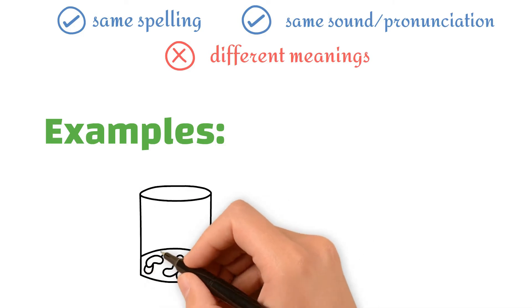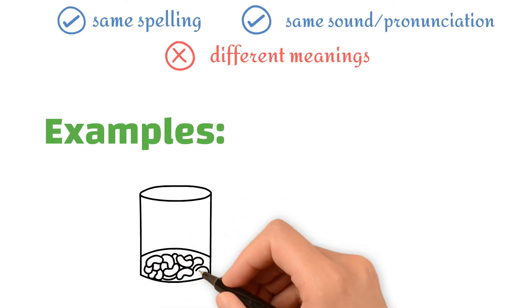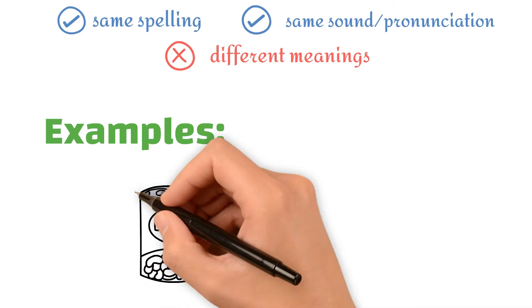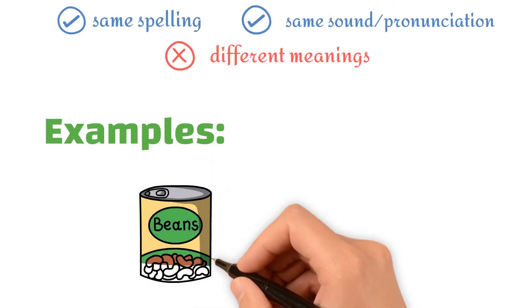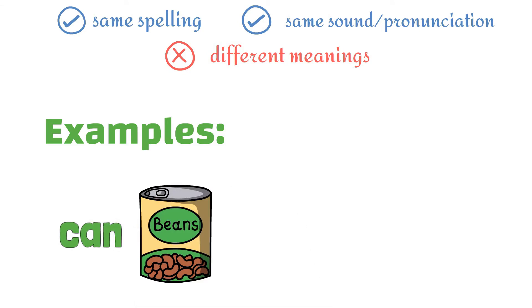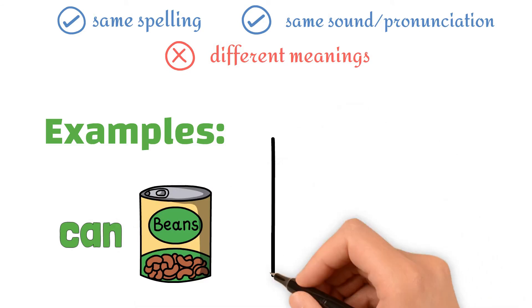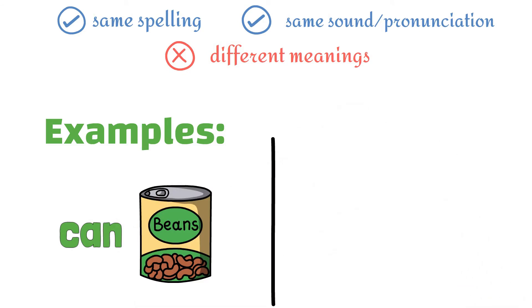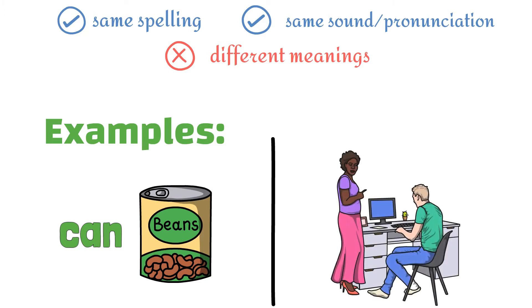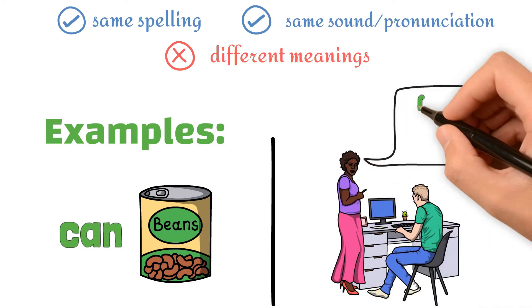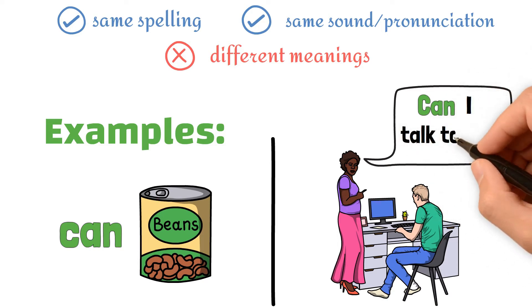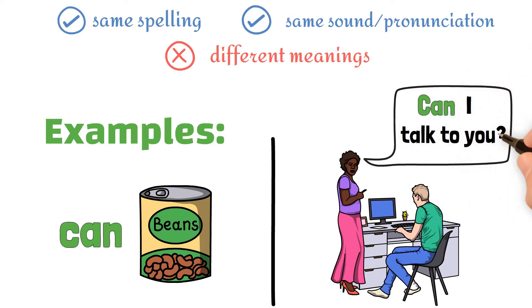Examples. Can — like a can of beans. Can you? Both are spelled and sound the same but have different meanings.